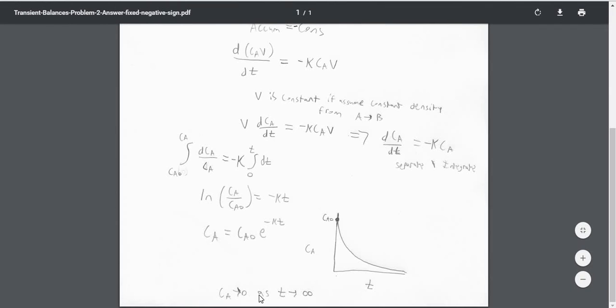So as time goes to infinity, Ca is going to go to zero, and it has this exponential type of decay look.